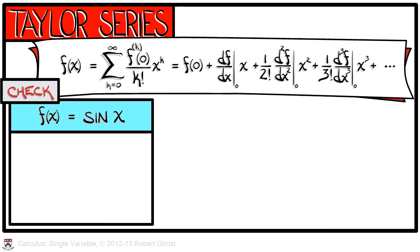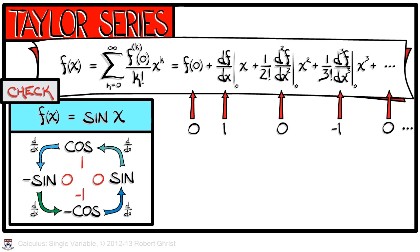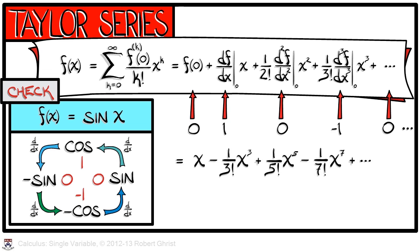Let's look at another function for which we know a series expression, that of sine of x. The derivative of sine gives you cosine. The derivative of cosine is minus sine. The derivative of minus sine is minus cosine, and then the derivative of minus cosine is sine. Evaluating all of these at an input of 0 gives us alternating forms of 0 and non-zero terms, with the non-zero terms having alternating signs. We can substitute in these derivatives, obtaining 0, 1, 0, negative 1, and repeating in blocks of 4. When we write out the resulting Taylor series, we see the familiar form: x minus x cubed over 3 factorial, plus x to the 5th over 5 factorial, etc. This is the expression for sine of x.